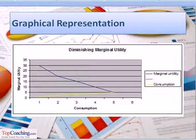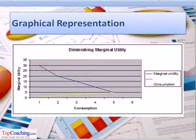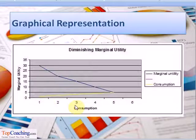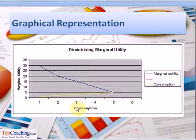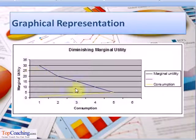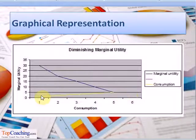We have graphically represented the same conclusions here in the form of a graph. The number of bottles of cold drink consumed are plotted on the x-axis and the marginal utility derived on the y-axis. The blue line shows the diminishing marginal utility with an increase in the number of bottles.